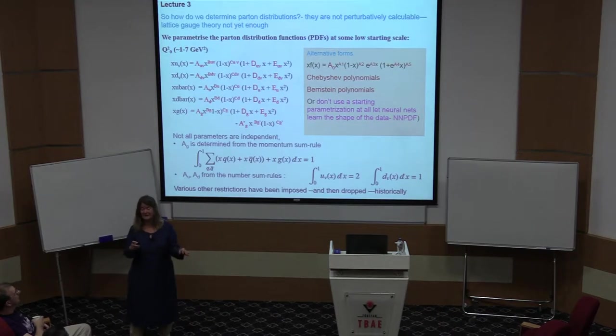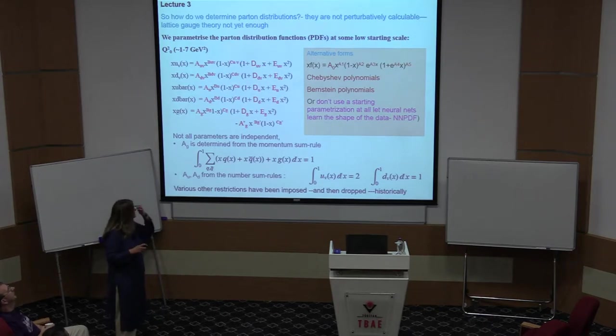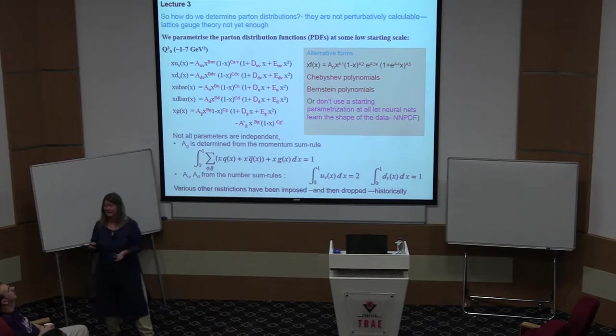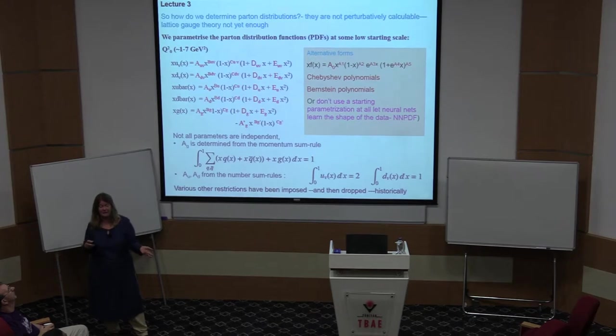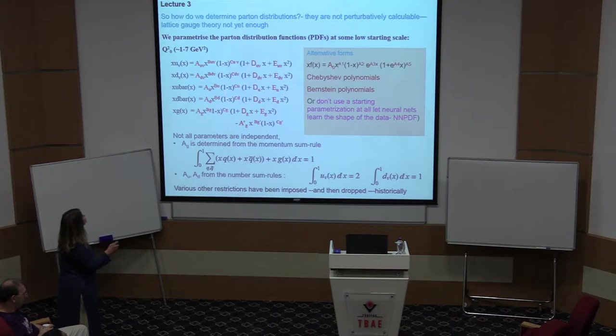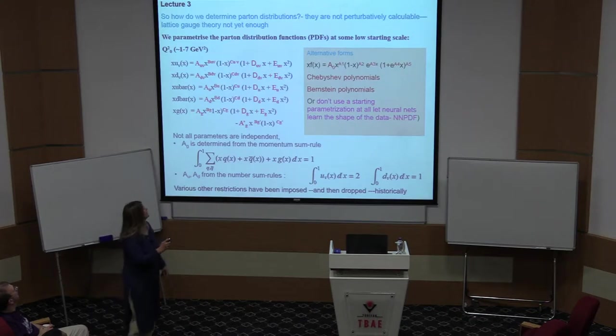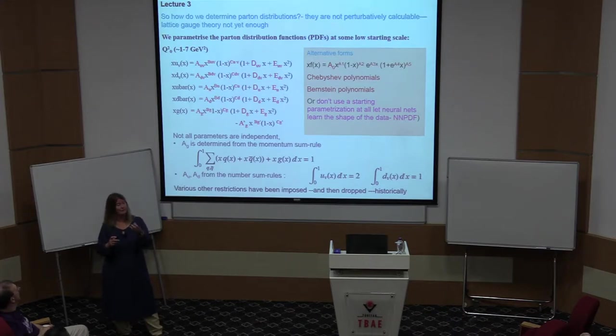There are actually now many collaborations in the world that do this work. Historically, there used to be just two. There was the British team that was called MRST that worked from Durham, and there was the American team that called themselves CTECH. Some of you may have heard of and come across these things. As we got to the onset of the LHC, actually, more groups jumped into this and started producing partons. The neural net PDF began. There are also others with initials like ABM. And there's the one I was involved with myself, which is a PDF based purely on HERA data.